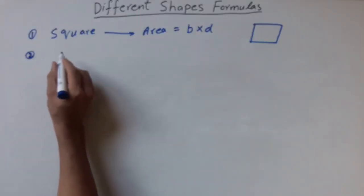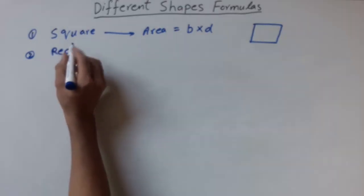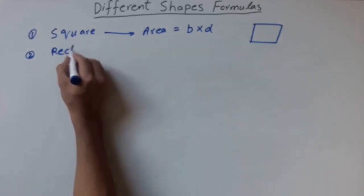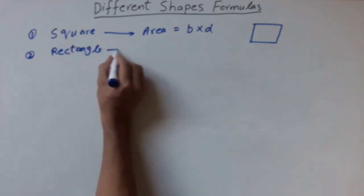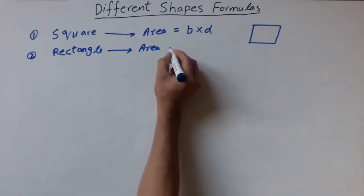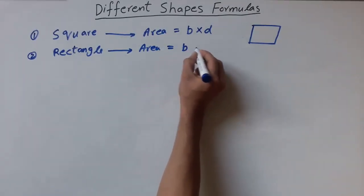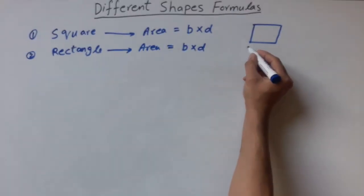Second one we have rectangle. Area is equal to B multiplied by D. Area of square and area of rectangle is same thing.